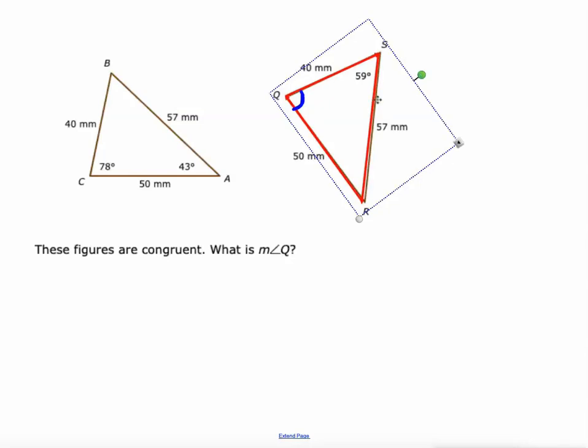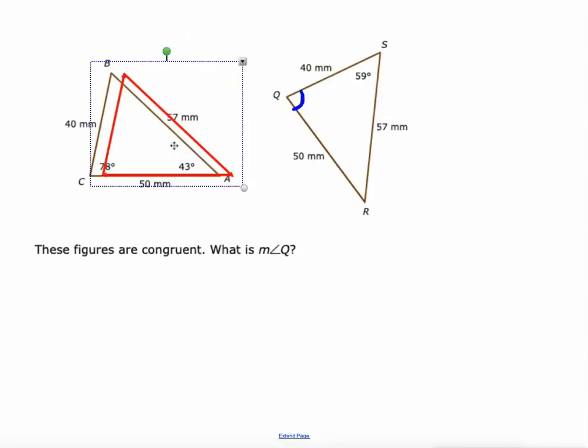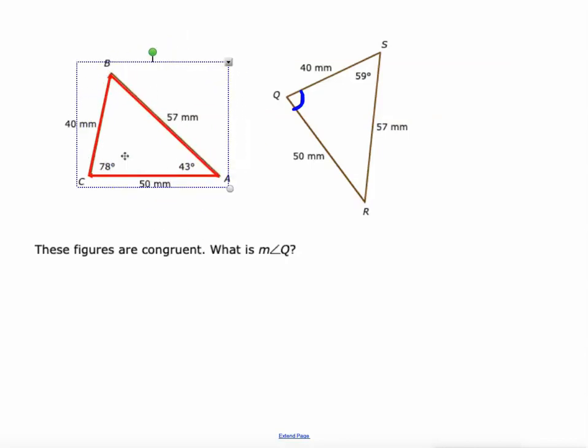Okay, so angle Q, you can see it's that measure right there, which if we move this one back with a translation and rotation, you can see it's that 78 degree angle there. You don't have the ability to rotate shapes and stuff like that on your screen.